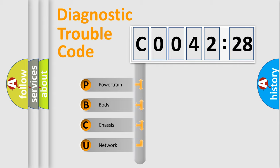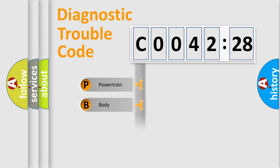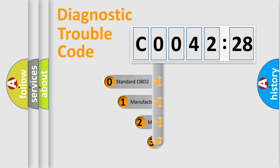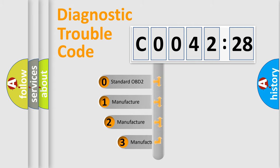We divide the electrical system of the automobile into four basic units: powertrain, body, chassis, and network. This distribution is defined in the first character of the code.